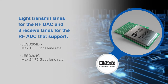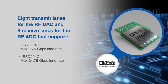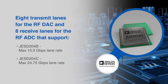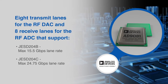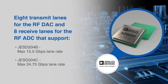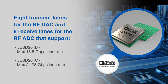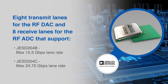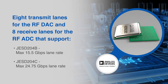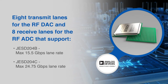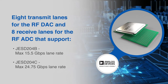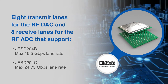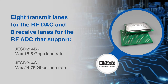The AD9081 also has eight transmit lanes for the RF DAC and eight receive lanes for the RF ADC that support JESD-204B with a maximum 15.5 gigabits per second lane rate and JESD-204C with a maximum 24.75 gigabits per second lane rate.